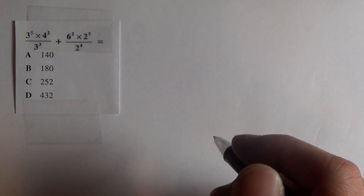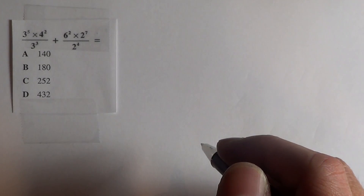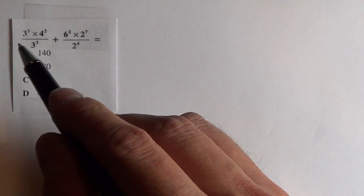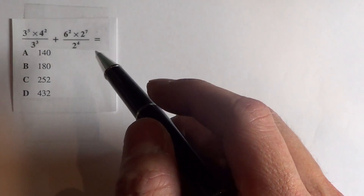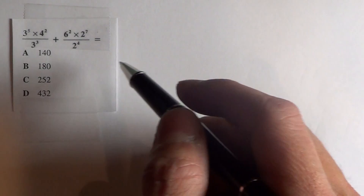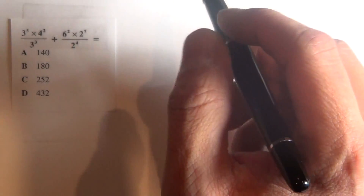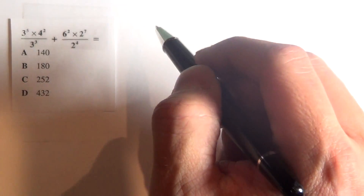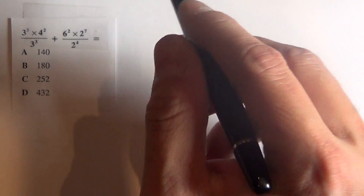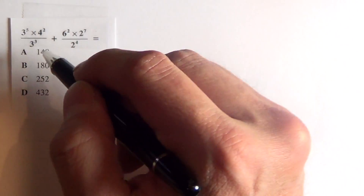Here's Casey math problem number 9. If you look at this problem, you see a lot of numbers with exponents, and you might be overwhelmed. But the first thing to do is to simplify it, and I'm going to show you how to do that right now.